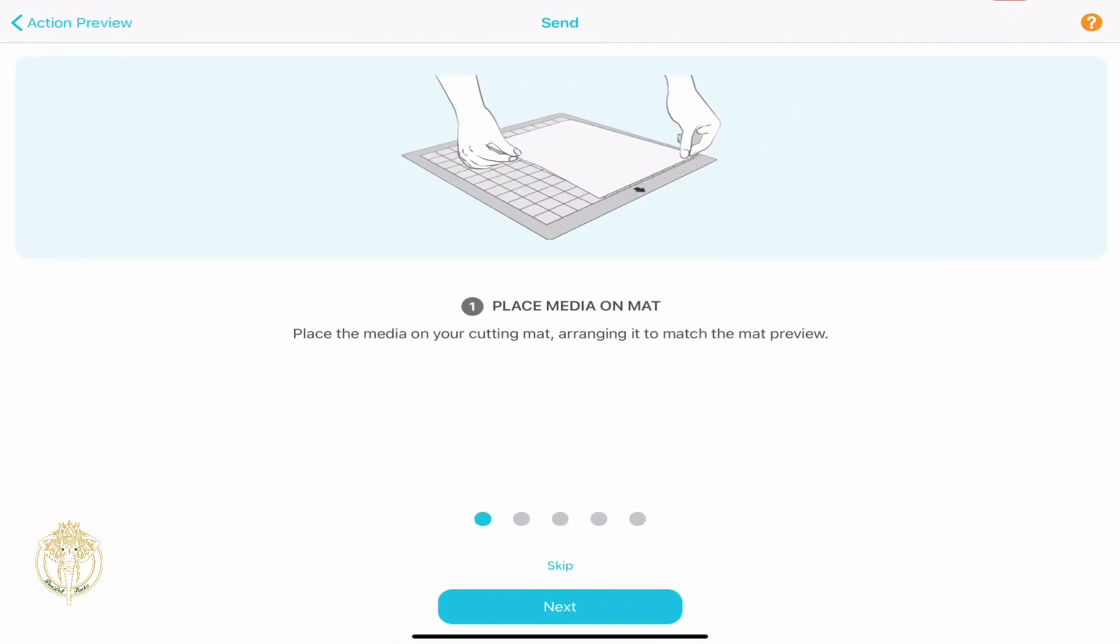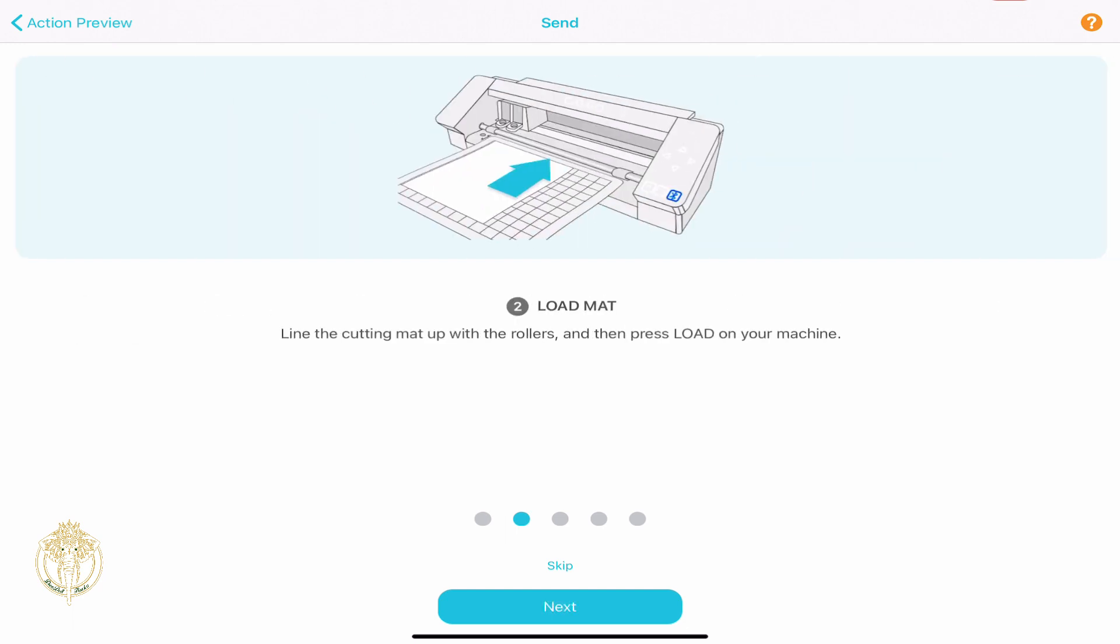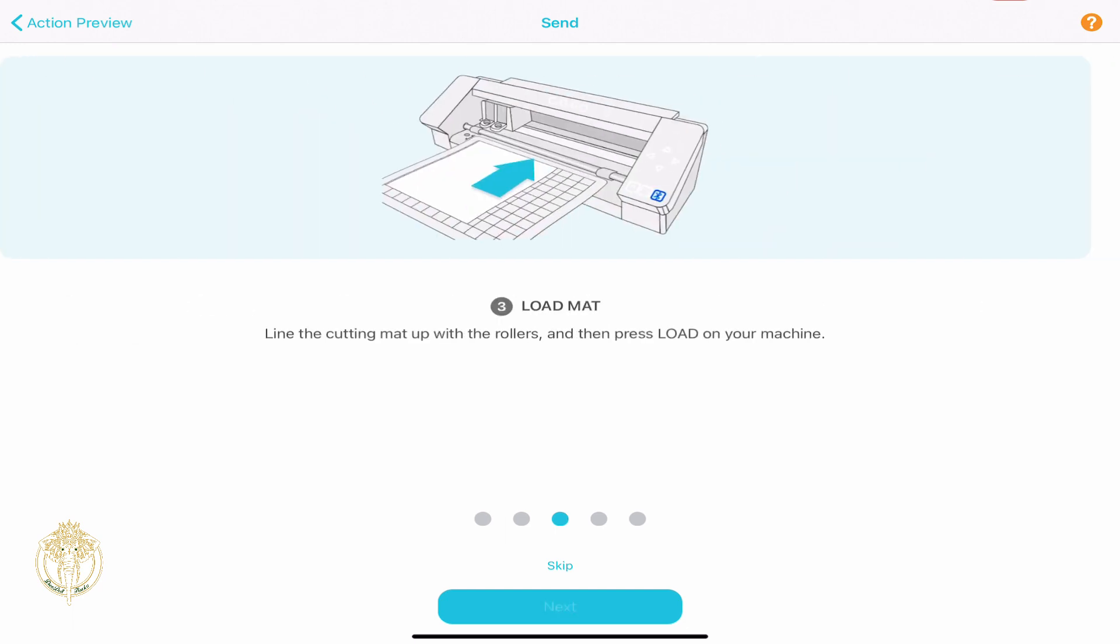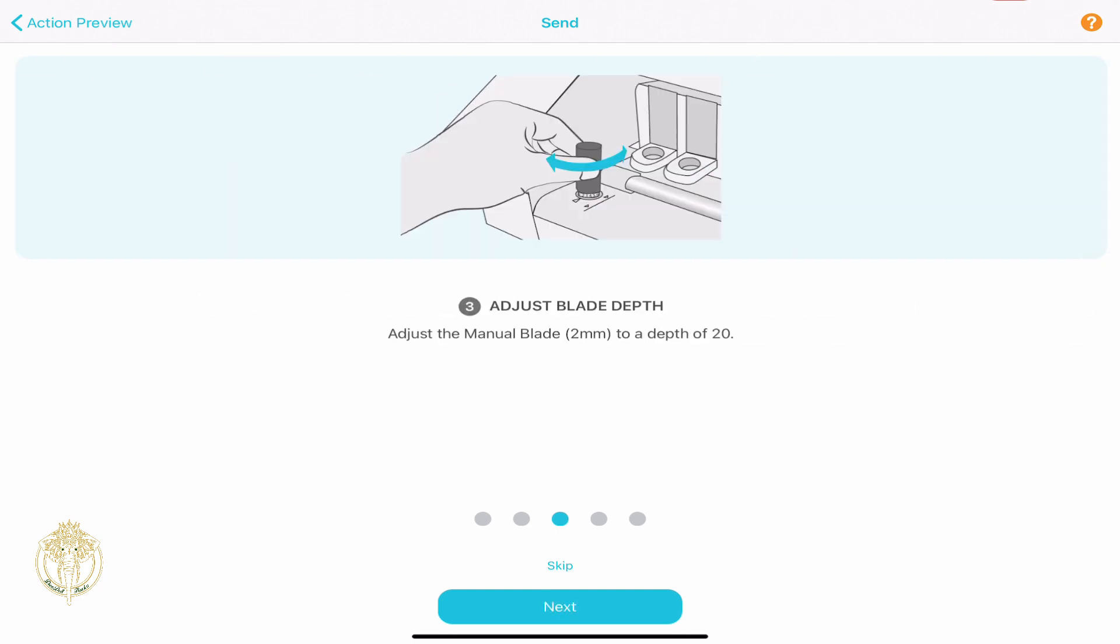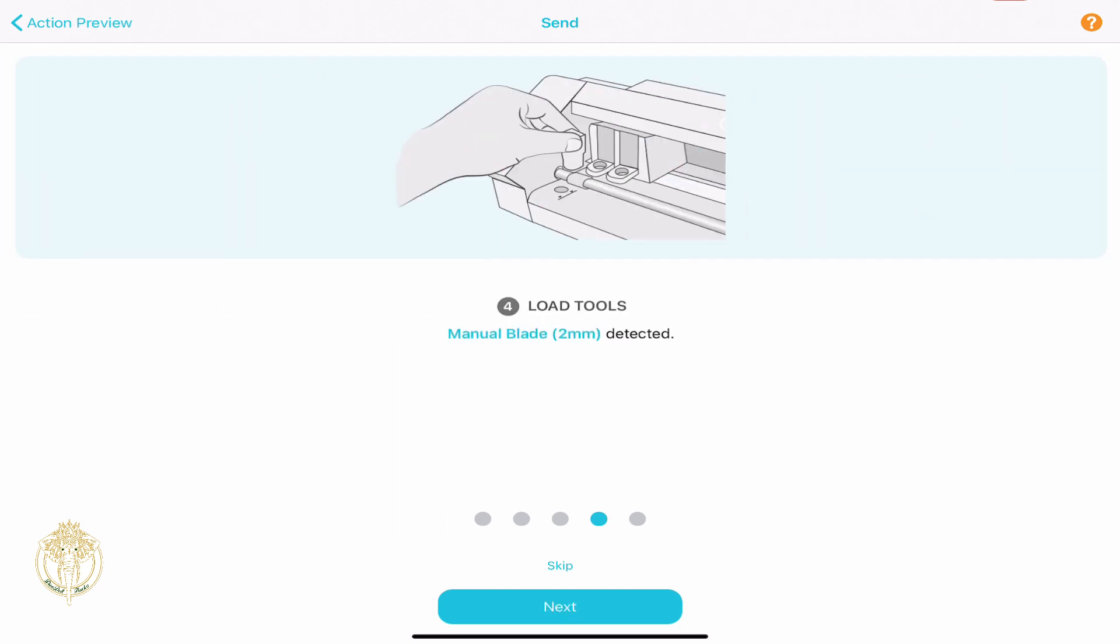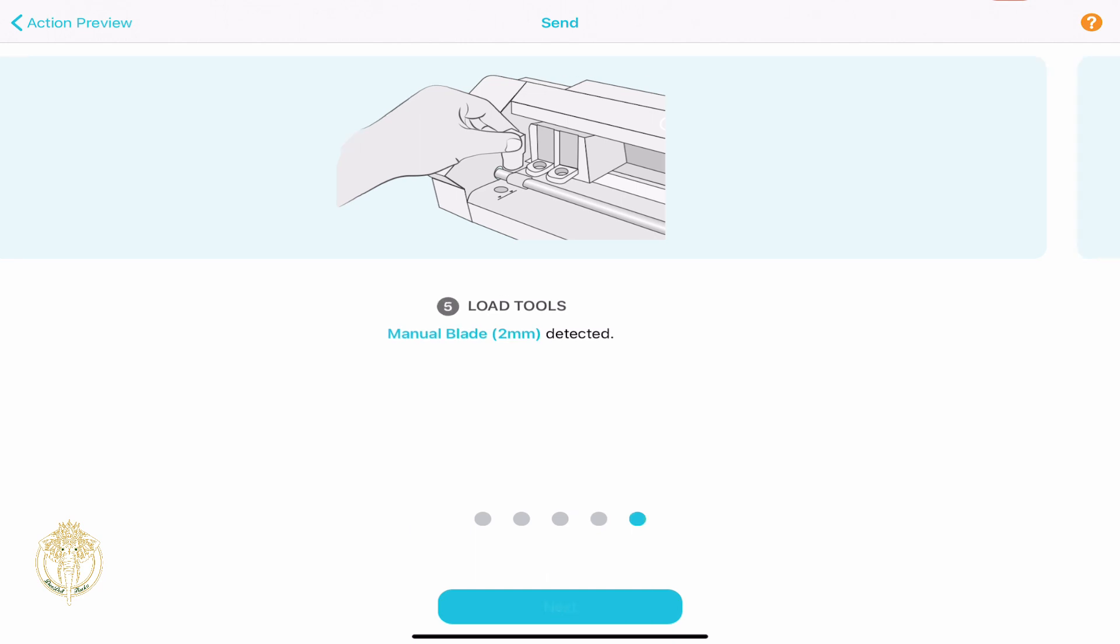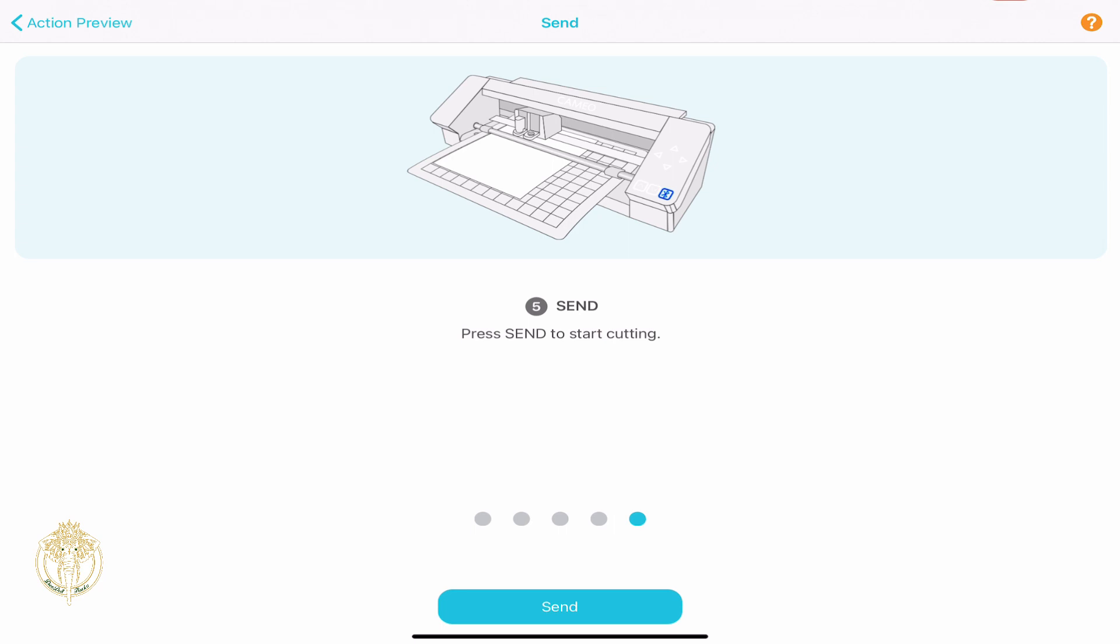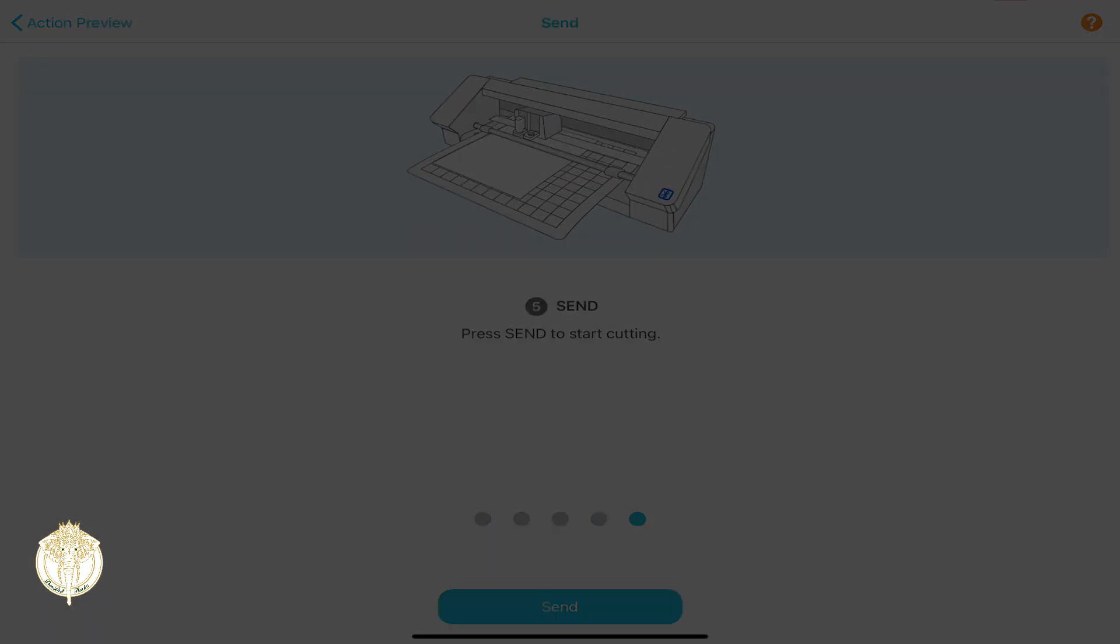Now you just follow the prompts that are on the screen. I've already placed the media on there. I've loaded my mat. My blade depth is actually already adjusted but again it's going to give you a reminder so make sure you're reading your screen and paying attention. Then you click next and it's showing you what tool was detected. This is the manual blade two millimeter that was detected and now you're ready to send your project to cut.